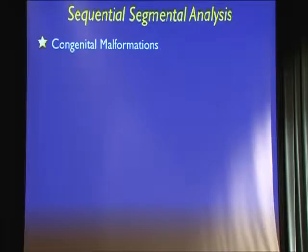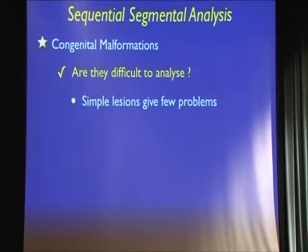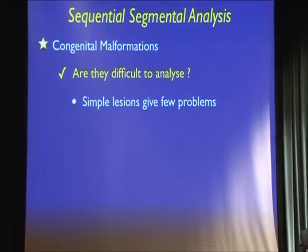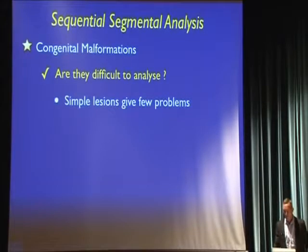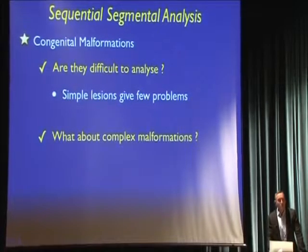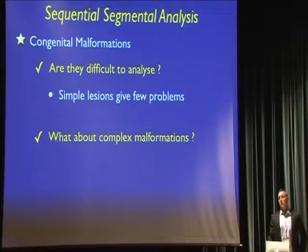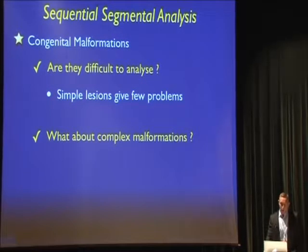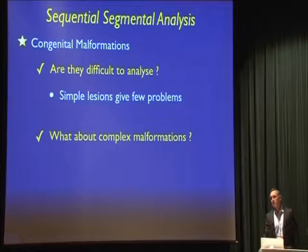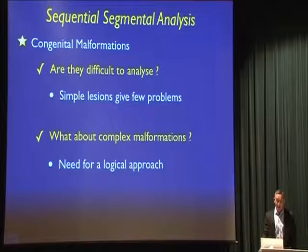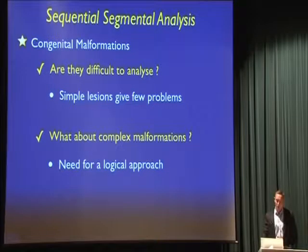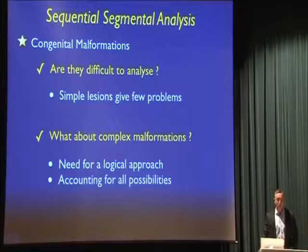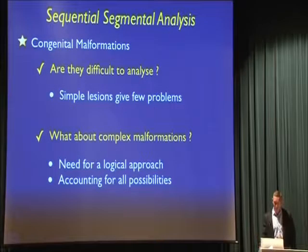Congenital malformations are not always difficult to analyze. Simple lesions such as ASDs, PDA, or VSD really give very few problems in analysis, though we can have some problems with terminology. But when we come to much more complicated malformations, such as patients with congenitally corrected transposition, or where the parts of the heart are not in their anticipated position, we can run into problems. We need a logical approach for analysis — to go through the heart in a standardized way so that we can account for any possibility.